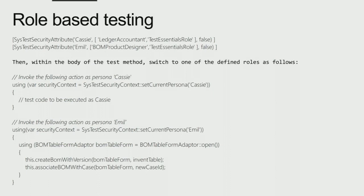Another testability feature we enabled is support for role-based testing. You specify the role in an attribute, and there are two examples showing two different roles. If you want to use just one role in the test method — which is the typical thing — you just specify the attribute and by default the test will execute in that role. You also have the option to change the security context within a test method from one role to another, again using the using statement so things get disposed properly.